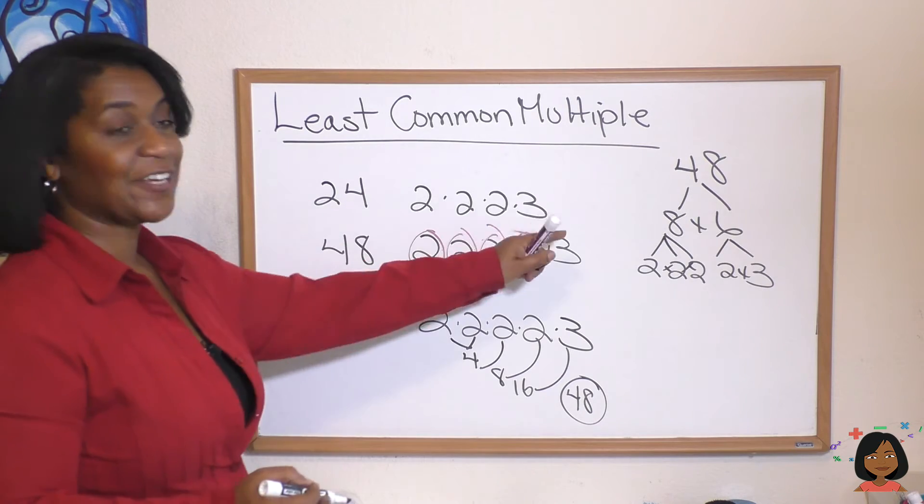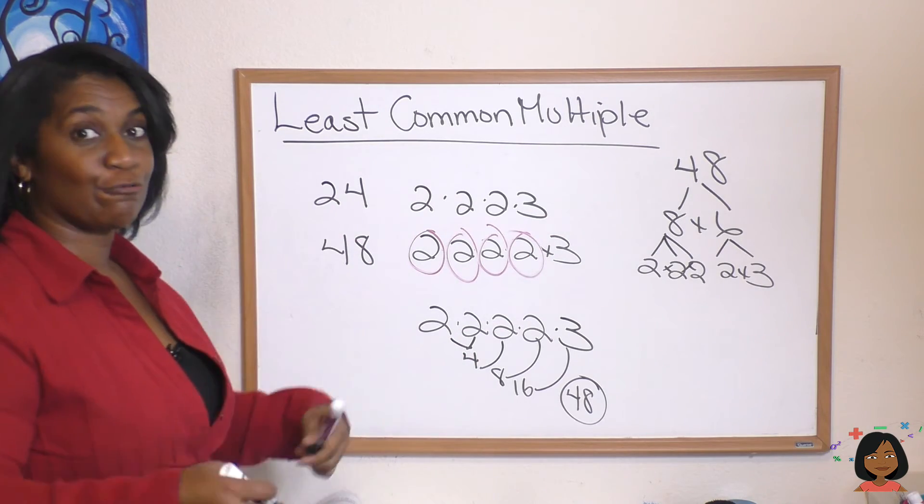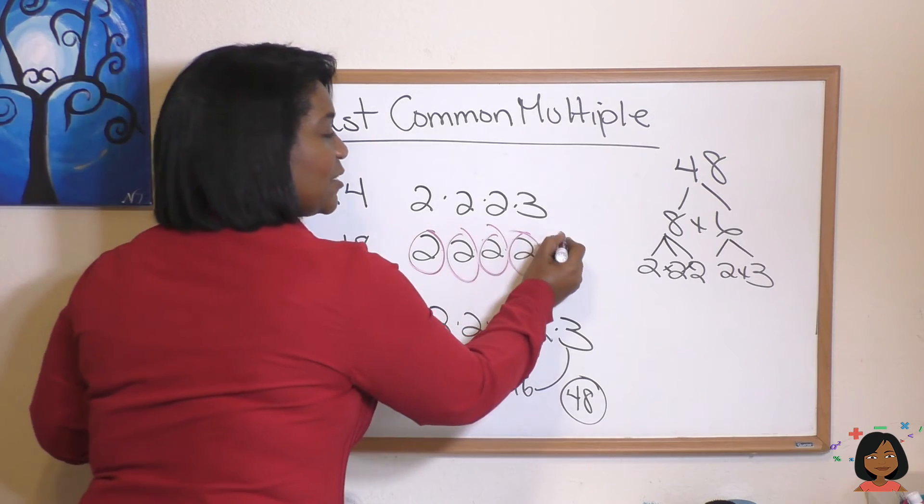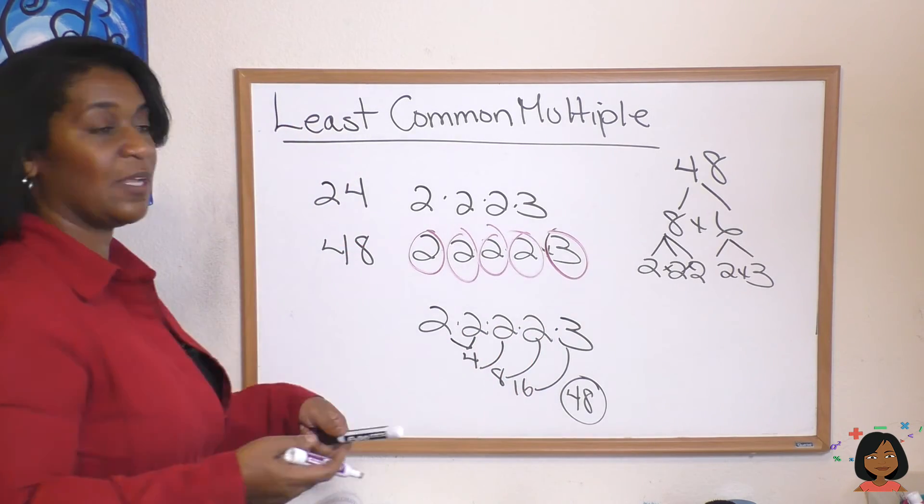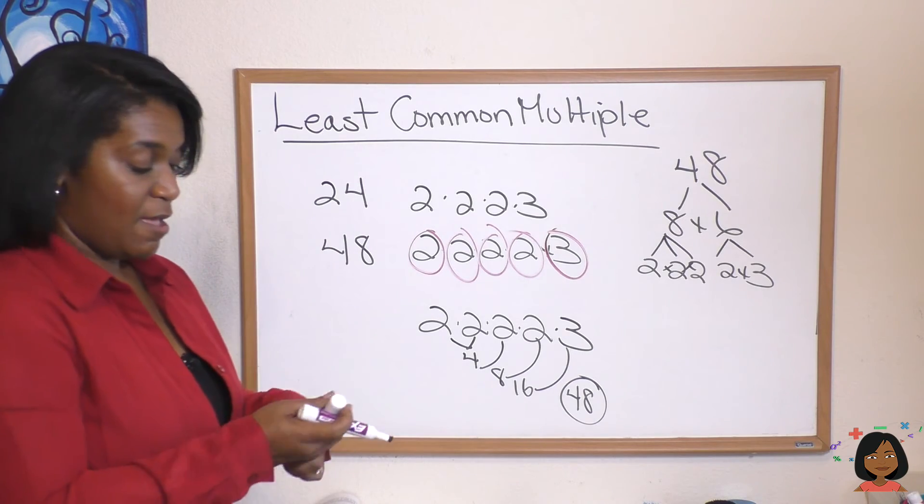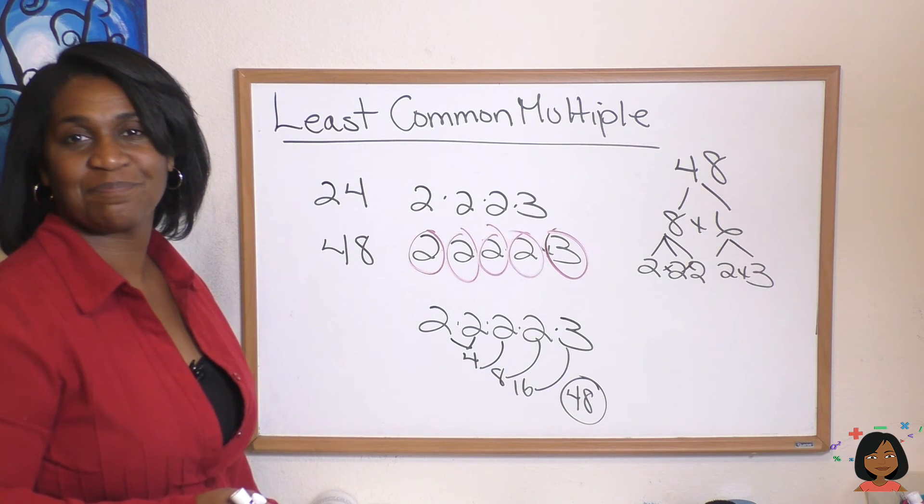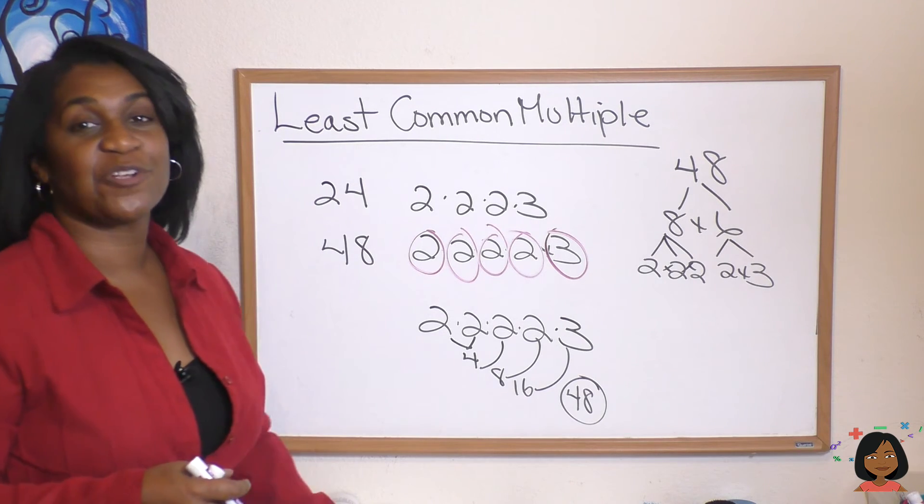So again, you factor each one individually and then choose the greatest occurrence of each number. I'm gonna circle this so you can see—I chose that one three because we only saw it occur once in each number, and then multiply it together. That's how you find the least common multiple, and that's it.